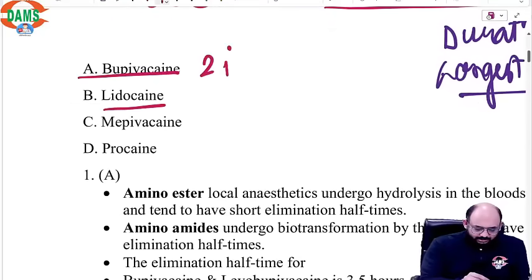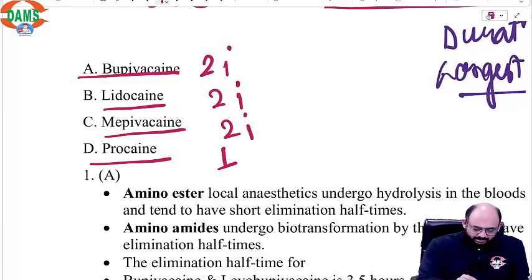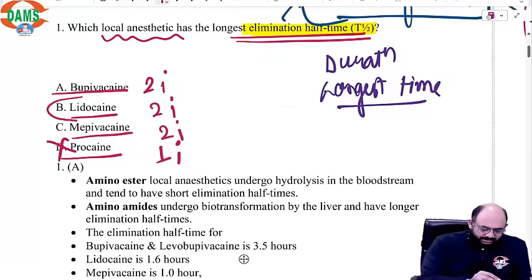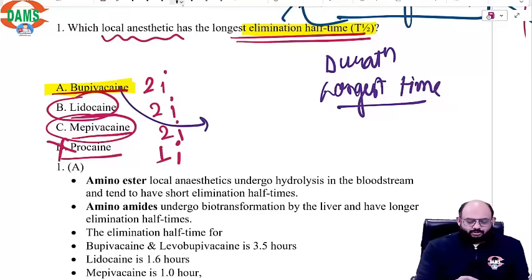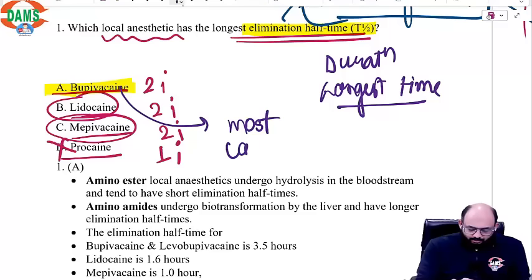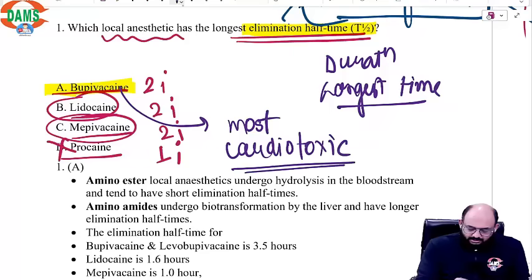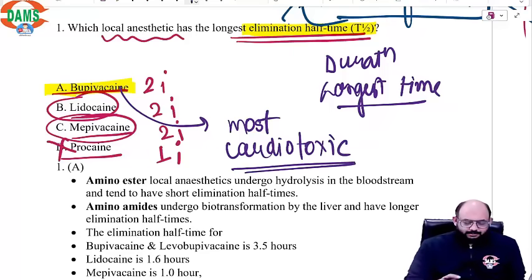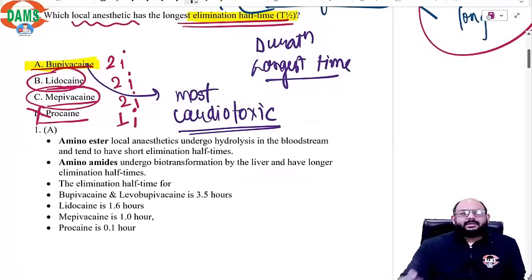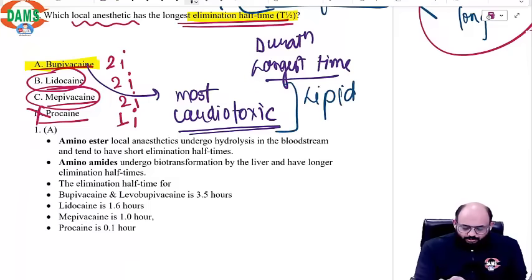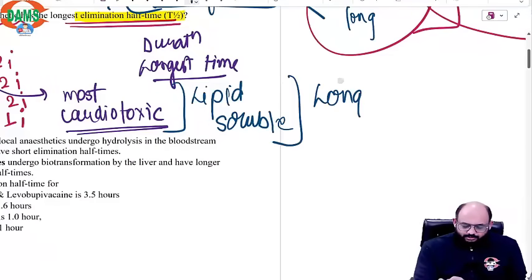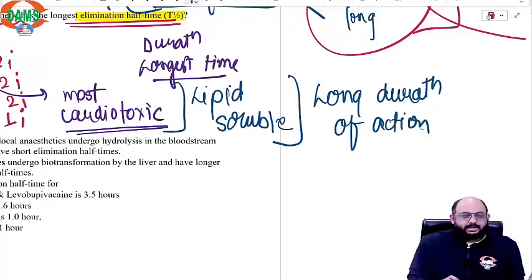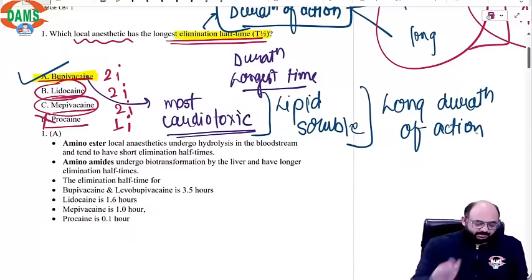Looking at the options: bupivacaine has two 'i's, lignocaine has two 'i's, mepivacaine has two 'i's, procaine has one 'i' — so procaine cannot be the answer. We normally use lignocaine and mepivacaine frequently in clinical anesthesia; these are intermediate-acting local anesthetics. But we know bupivacaine is the most cardiotoxic — a fact you cannot forget, as we have seen questions on this in the last few years. Because it is most cardiotoxic, it is highly lipid-soluble, and since it is highly lipid-soluble, it has a very long duration of action. The correct answer to this question is bupivacaine.